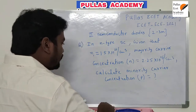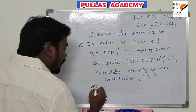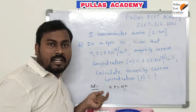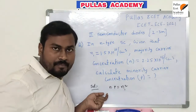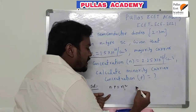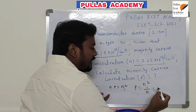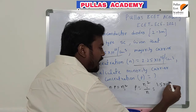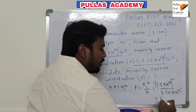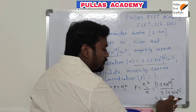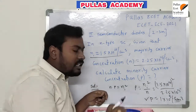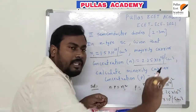You can use mass action law to calculate P, where N times P equals Ni squared. Given data: Ni and N are provided; we need to calculate P. So P equals Ni squared divided by N, which is 1.5 times 10 to the power 10, whole squared, divided by 2.25 times 10 to the power 15. Therefore P equals 1 times 10 to the power 5 per centimeter cube. That is the correct answer.